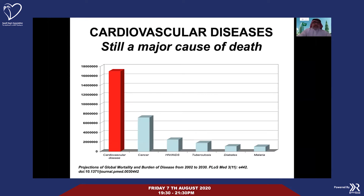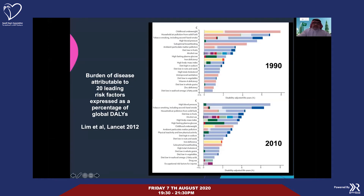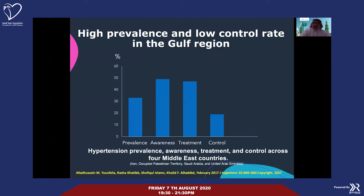Cardiovascular disease is still the number one killer worldwide. Heart diseases kill more people than anything else — even more than COVID, HIV, diabetes, and cancer. Hypertension has remained from the 1990s to 2010 and up till now the major contributor to cardiovascular disease. The prevalence of hypertension in this region is about 33%. Unfortunately, half of patients are not aware of their hypertension.